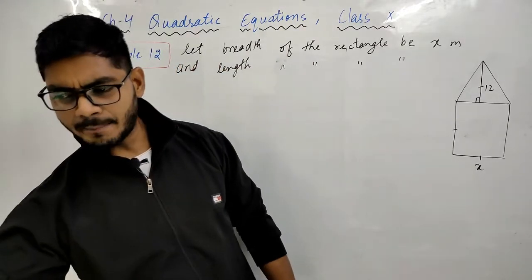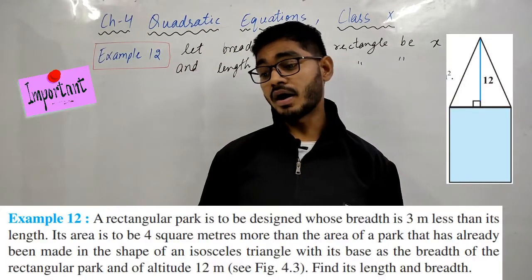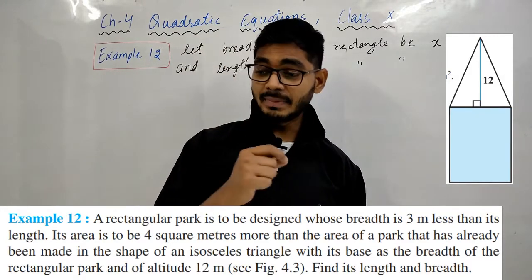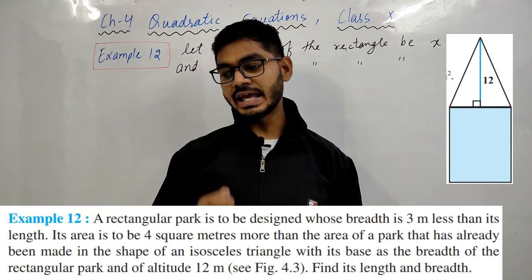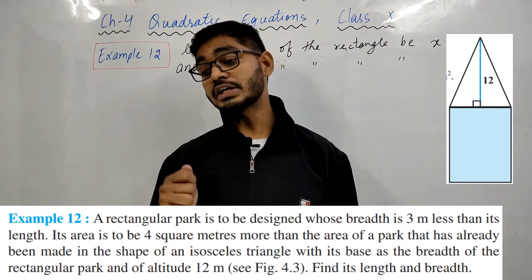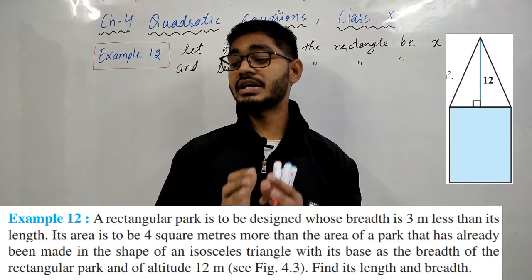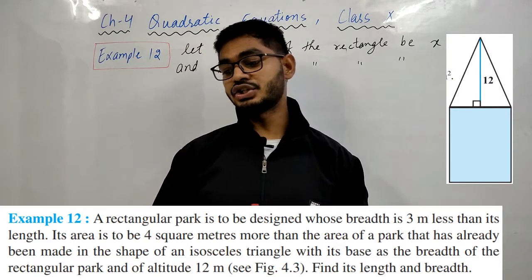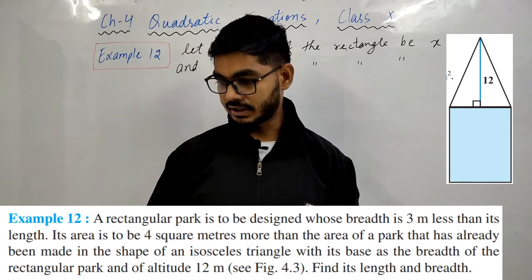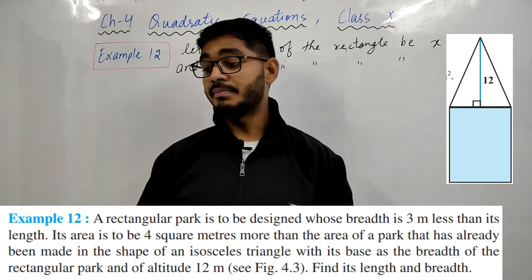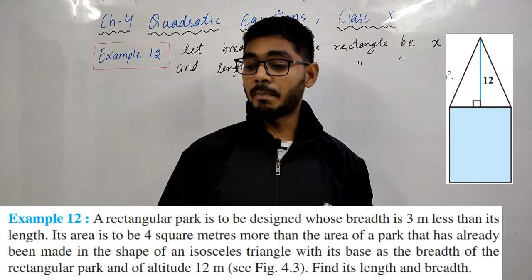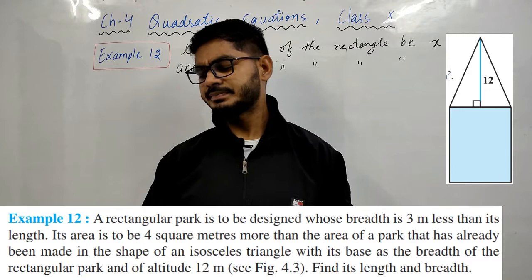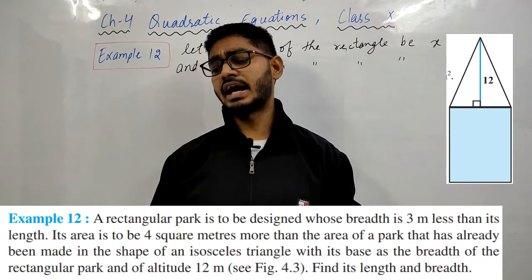Example 12: A rectangular park is to be designed whose breadth is 3 meters less than its length. Its area is to be 4 square meters more than the area of a park already made in the shape of an isosceles triangle, with its base as the breadth of the rectangular park and altitude 12 meters, as shown in the figure. Find its length and breadth.